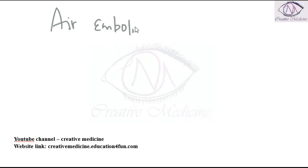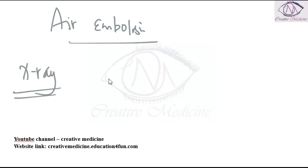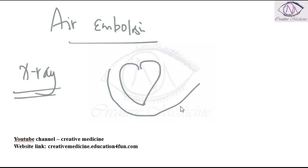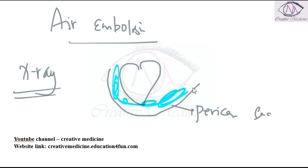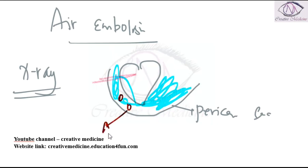First, an x-ray of the whole body is done by opening the pericardial sac. Open the pericardial sac and pour water into it. Then poke the right atrium with a scalpel. If air is present in the water, then it is air embolism.